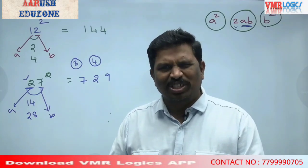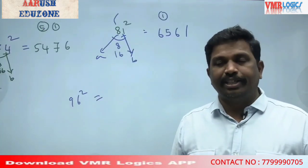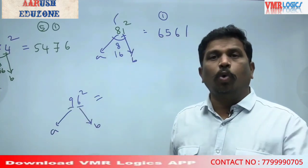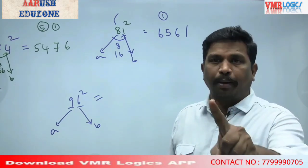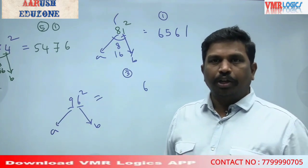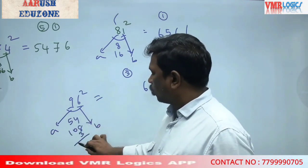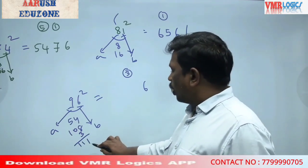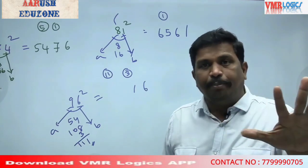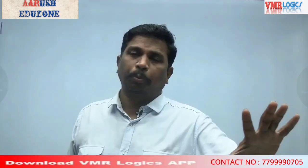Are you ready? Yes — very simple, guys! Let's see one more example: 96 squared. Here B is 6, A is 9. B square: 6 squared = 36, write 6 carry 3. Then 2AB and A square steps follow. That's 9216.